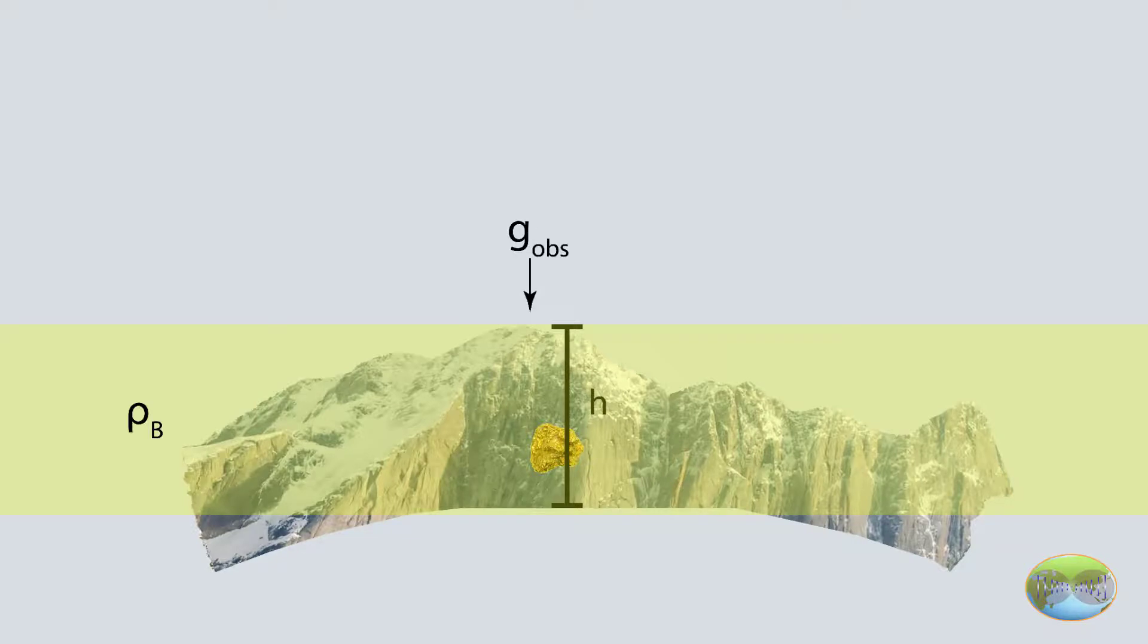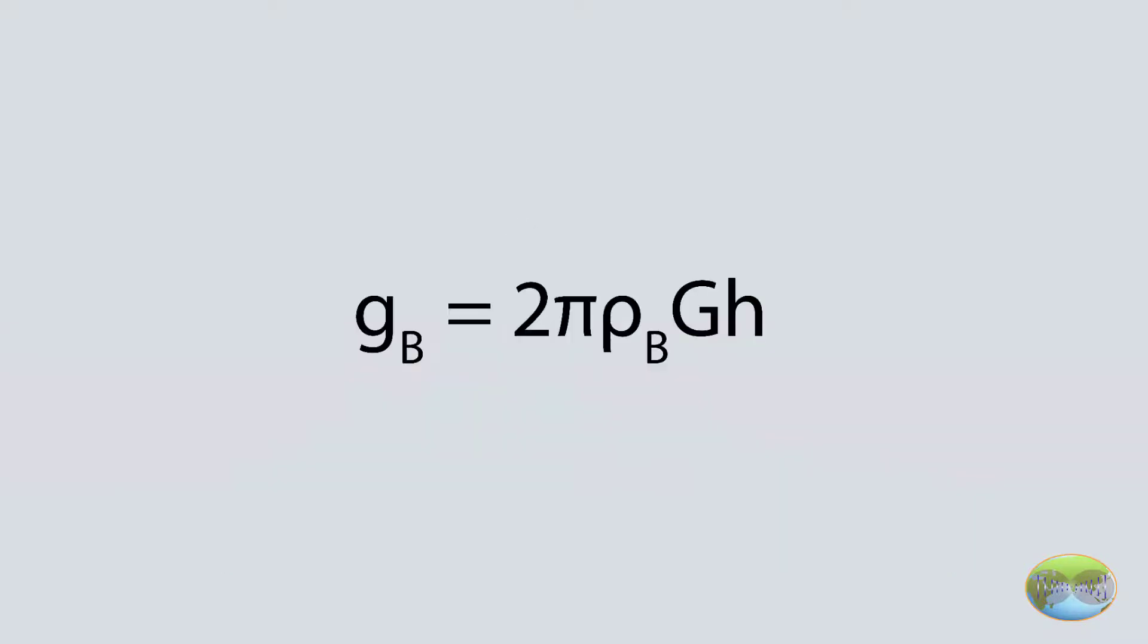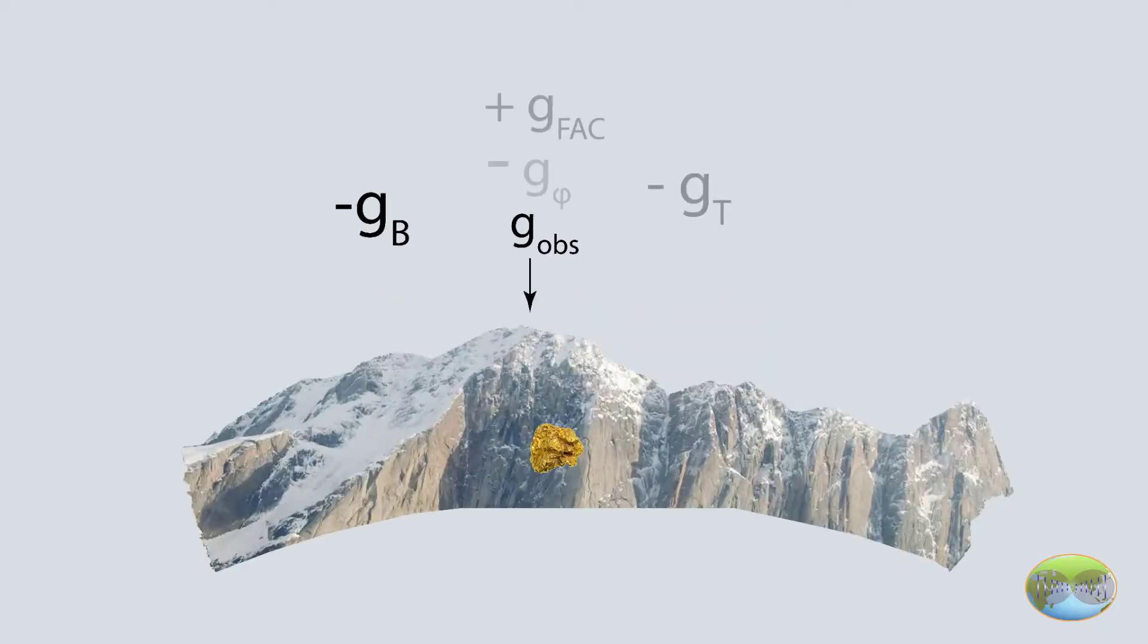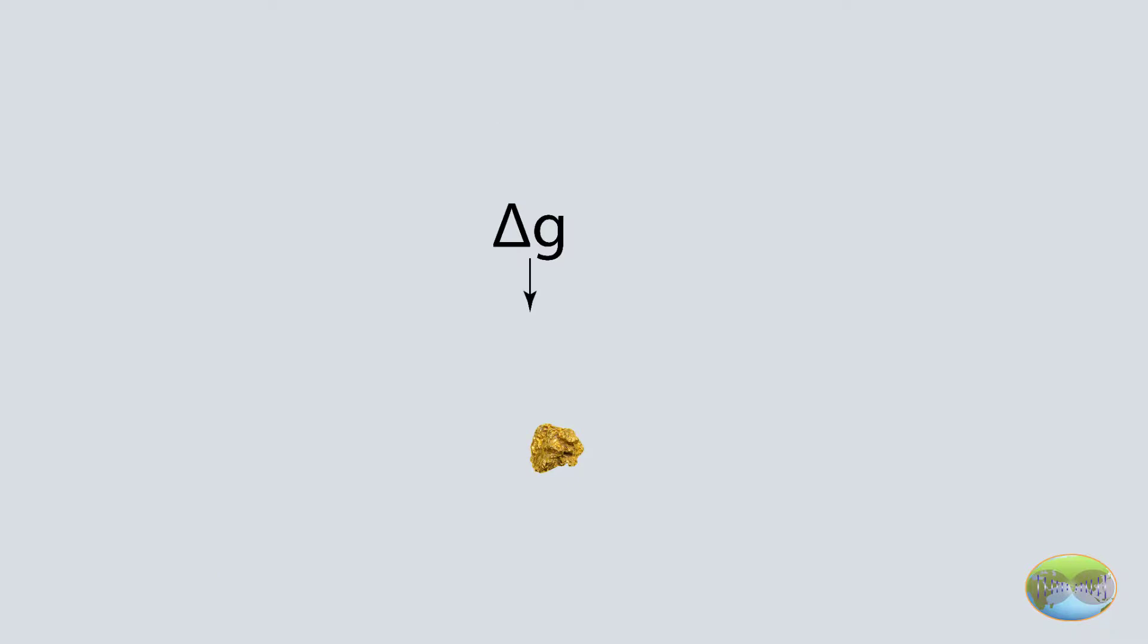Now the field generated by this is equal to 2πρgh, where ρ is the density of Bouguer slab and h is the height of it and capital G is the universal gravitational constant. And finally, even this is removed from our raw data. So what we have now is only the field generated by anomalous mass at the Bouguer surface or your observation point.